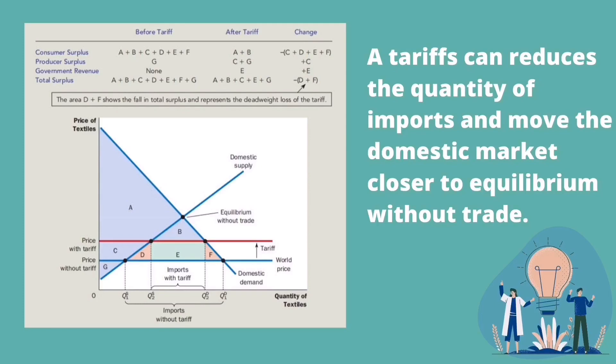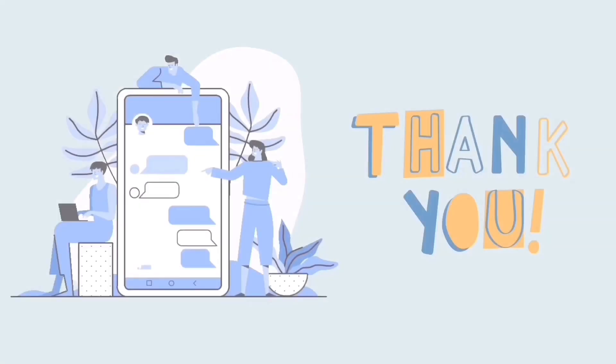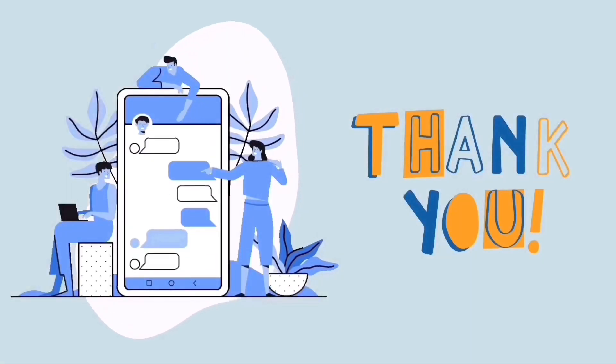A tariff causes a deadweight loss simply because a tariff is a type of tax. Like most taxes, it distorts incentives and pushes the allocation of resources away from the optimum.